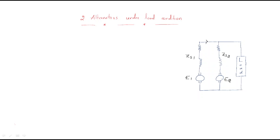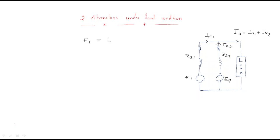The machines generate currents Ia1 and Ia2 respectively. The total current supplied to the load is Ia1 + Ia2. When two alternators are operated in parallel under load, certain conditions must be met: the generated EMFs E1 and E2 should be equal, and both alternator currents should be equal — Ia1 = Ia2.